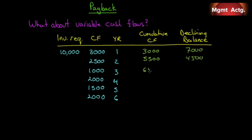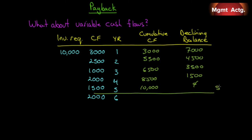At the end of year three, cumulative cash flow is $6,500 and we still need to recover $3,500. At the end of year four, cumulative is $8,500 and we still need to recover $1,500. At the end of year five, we're at $10,000 in cumulative cash flow and we've recovered everything — it has a five-year payback. That's juvenile and naive, but there it is.